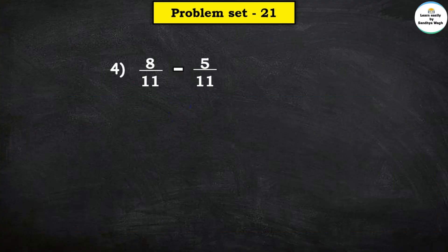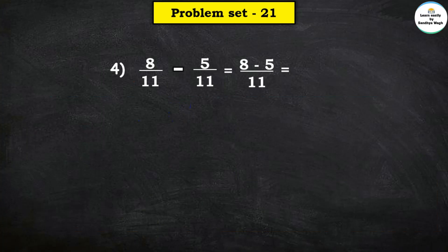Next: 8 upon 11 minus 5 upon 11. The common denominator is 11, so let us write 11 in the denominator's place and subtract the numerators. So 8 minus 5 is equal to 3. The answer is 3 upon 11.